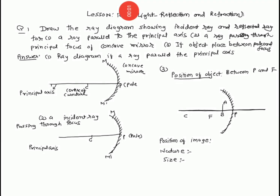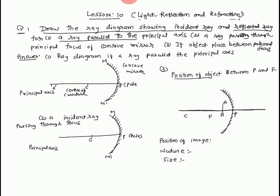Now I am picking question of lesson number 10: Light reflection. Question number 1 — draw the ray diagram showing the incident ray and reflected ray. Number 1: a ray parallel to principal axis. So we solve number 1.